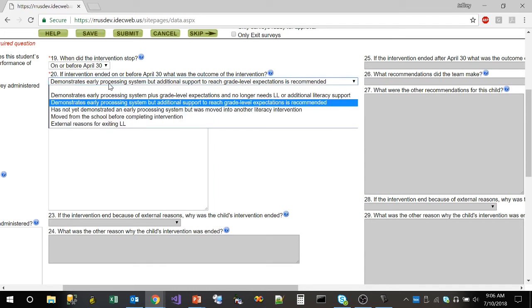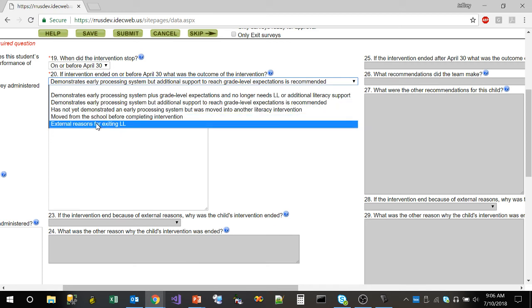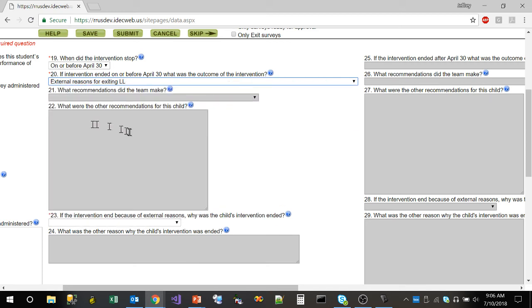23 and 24 only become enabled if the teacher selects external reasons for leaving or exiting literacy lessons. And then the teachers will see that then question 23 becomes enabled. They will select the reason why the external reason. If they select other, they will have to then fill in an answer for question 24.